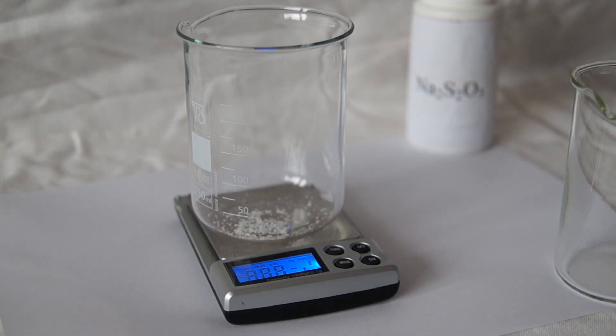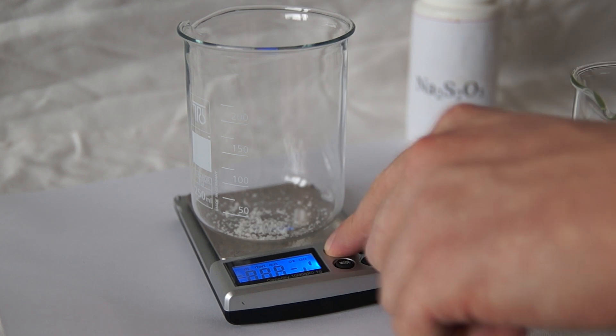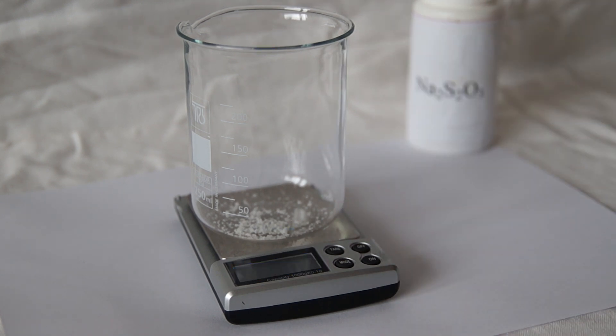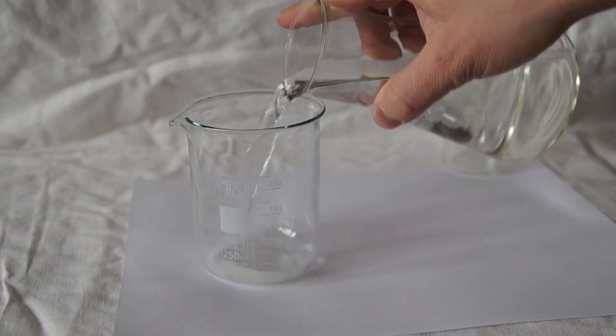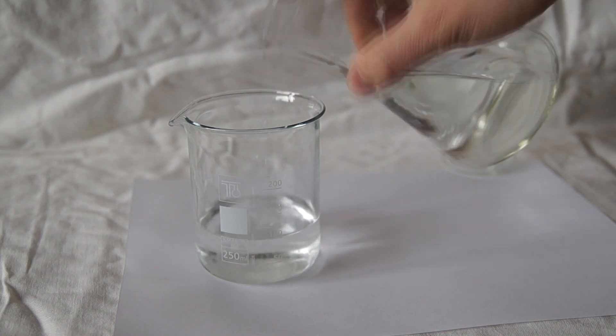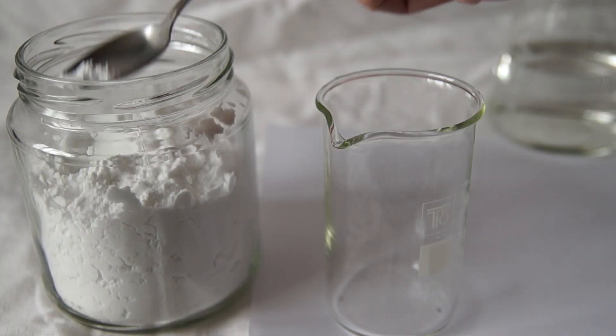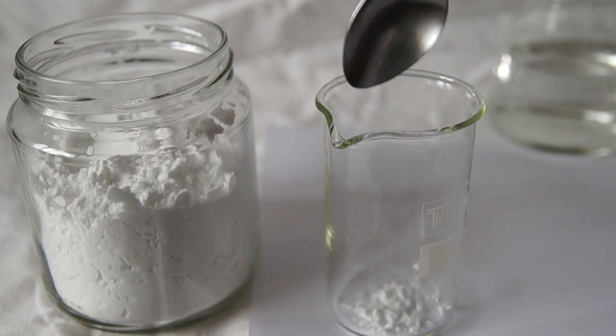First, let's take a beaker and pour there a small amount of potassium iodide. Next, dissolve the mixture into 100 milliliters of water. Take a second beaker and dissolve there a little soluble potato starch.